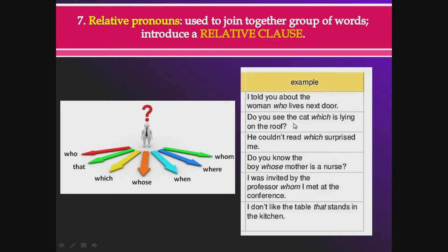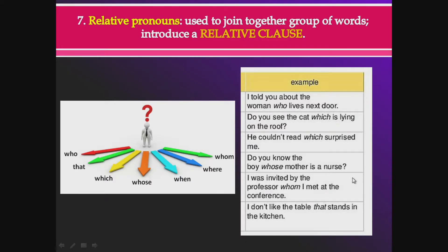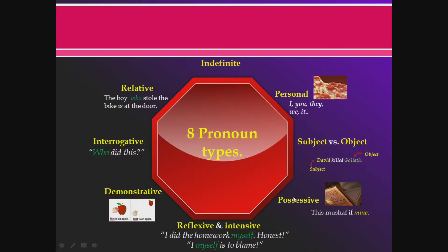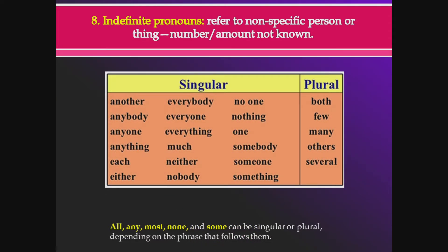More examples of relative pronouns: 'I told you about the woman who lives next door.' 'Do you see the cat which is lying on the roof?' 'He couldn't read, which surprised me.' 'Do you know the boy whose mother is a nurse?' 'I was invited by the professor whom I met at the conference.' 'I don't like the table that stands in the kitchen.' These all introduce relative clauses.